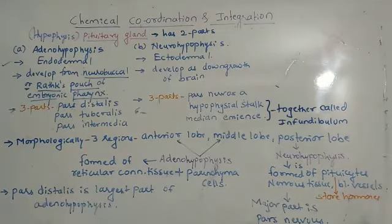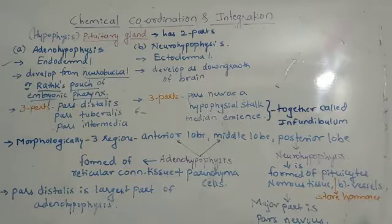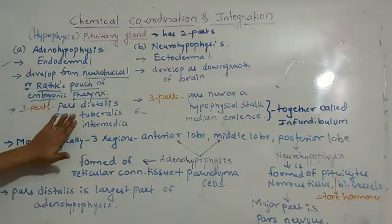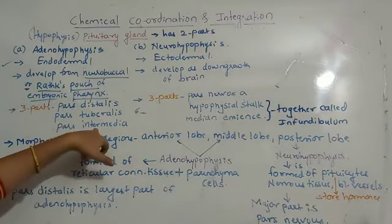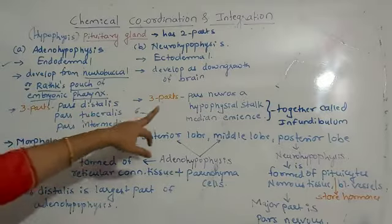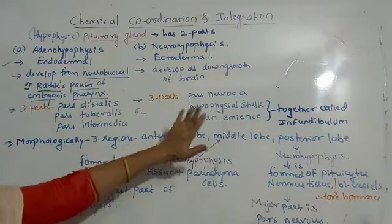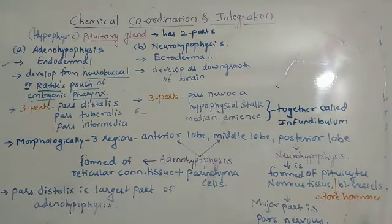Histologically, the pituitary gland has six parts: the pars distalis, pars tuberalis, and pars intermedia from the adenohypophysis; and the pars nervosa, hypophysis stalk, and median eminence from the neurohypophysis.